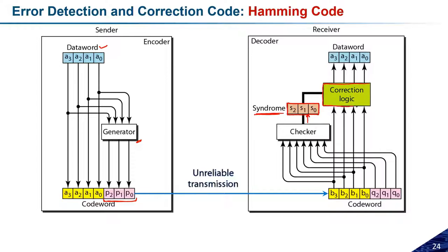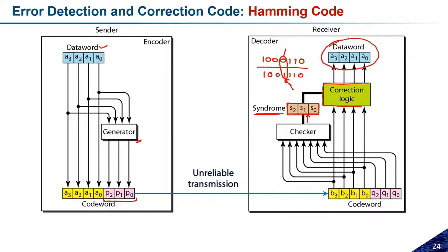The correction logic uses the syndrome bit to correct the error. Suppose I sent something like 1 0 0 1 and at the receiver I received 1 1 1 1 0 — we can see there is an error in a bit position. The syndrome bit will indicate which bit position has the error. If the received signal is 1 at that position and the syndrome bit says there is an error there, the correction logic simply complements that particular bit.